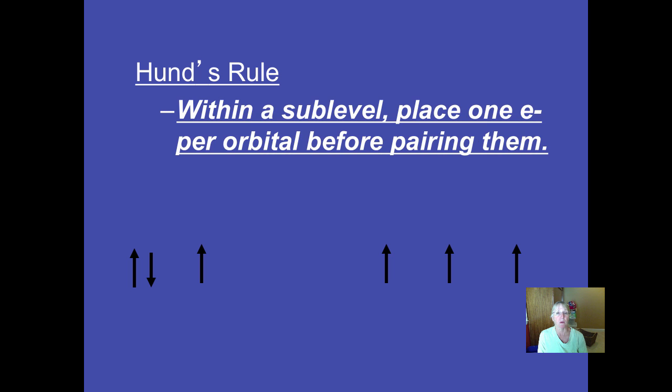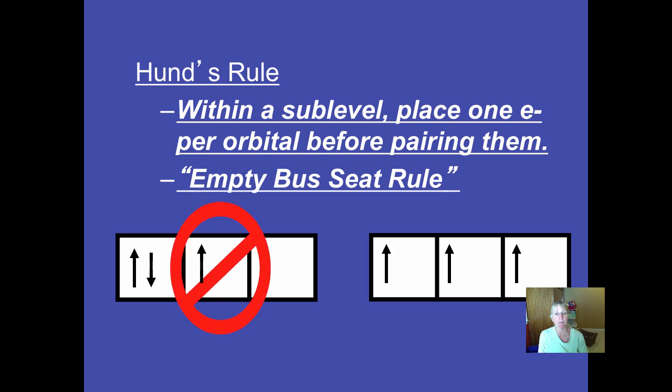The Hund's rule says that within a particular sub-level, you put one electron in and then you double them up. So in our example, we call this the empty bus seat rule. The thing that's wrong with this picture is that it excludes the rule, the Hund's rule.